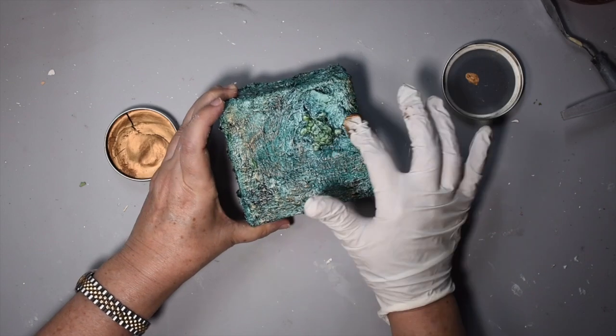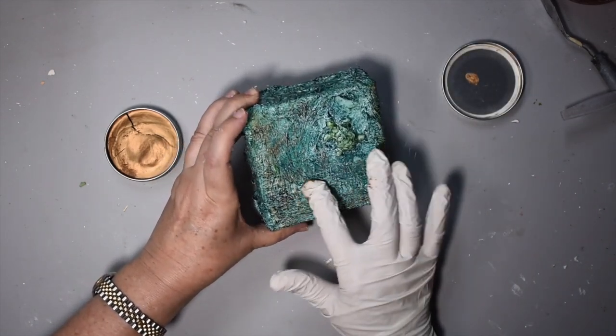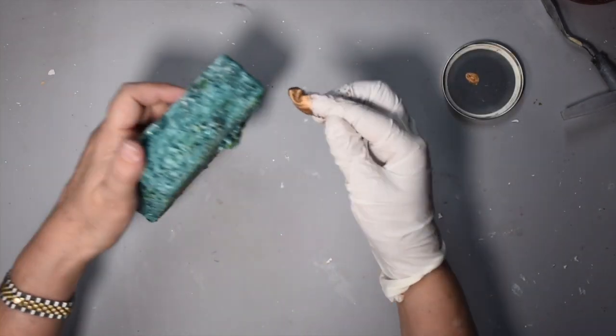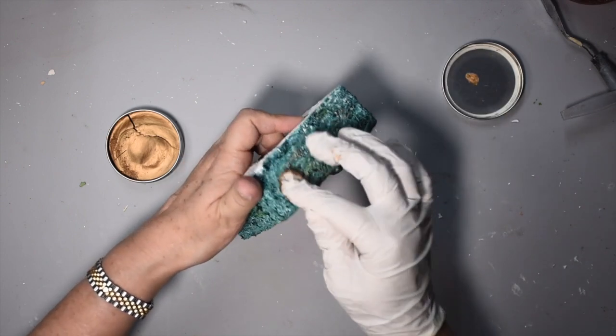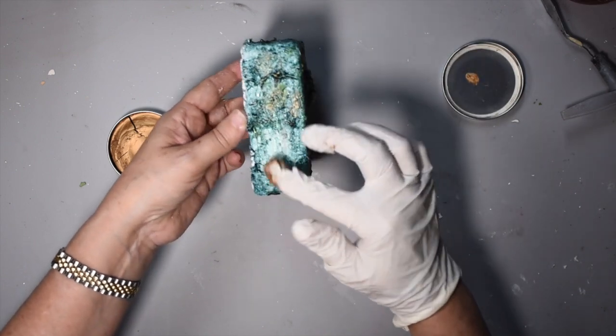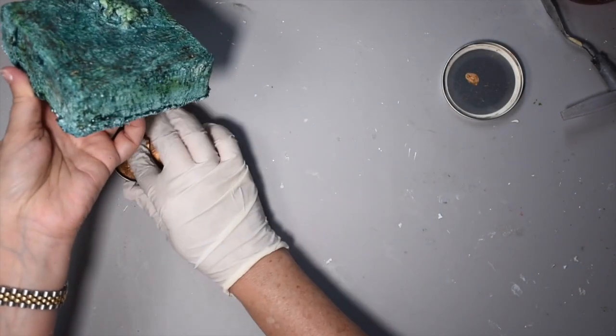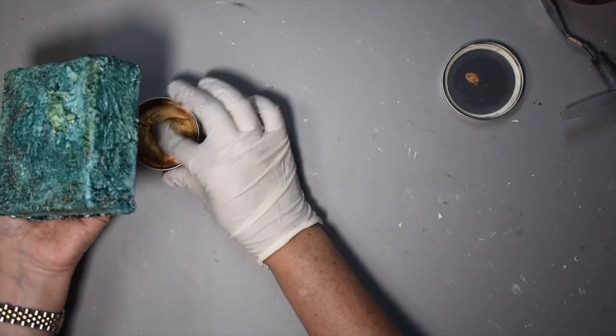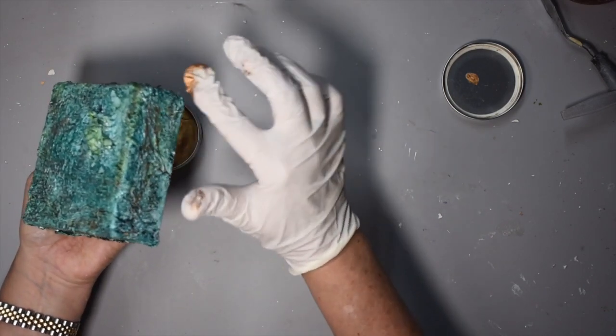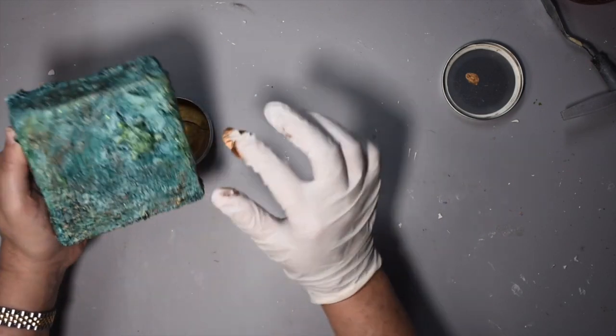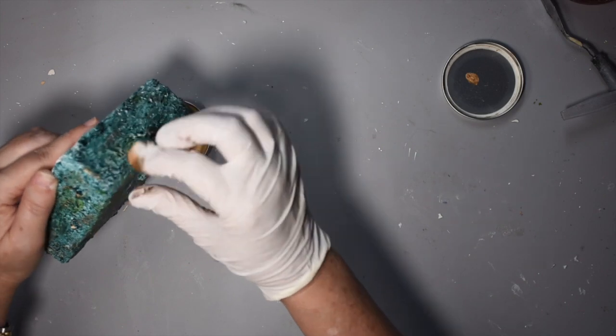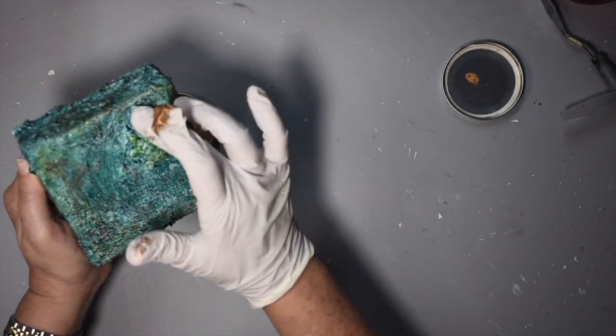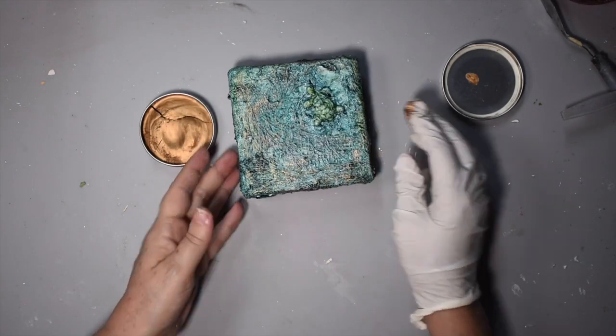And I'm just lightly adding this. Don't forget the sides and the edges. Another good way of adding it would be like a makeup sponge, because that wouldn't go down in the cracks—that would definitely just stay on the surface. There we go.